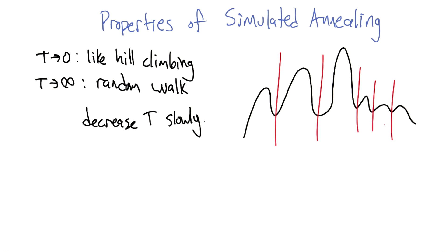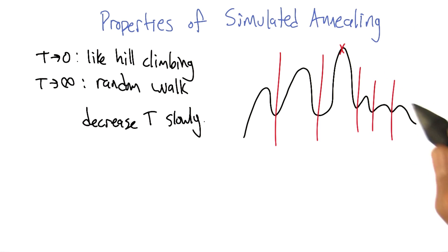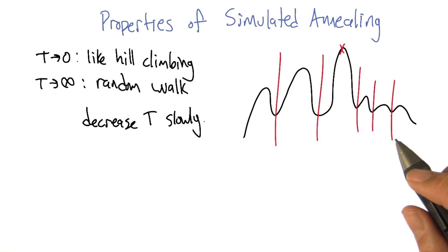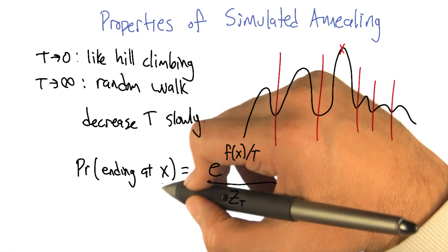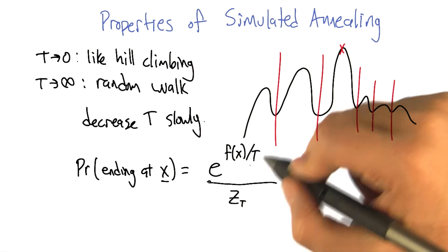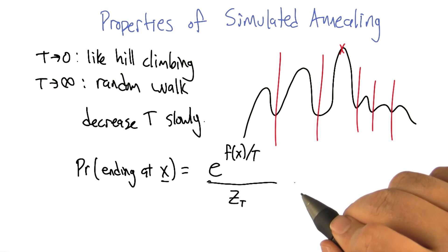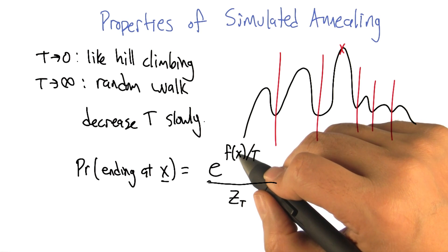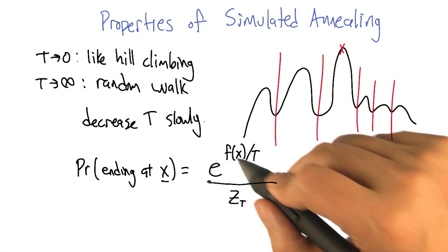So where do you end up? Well, if we're lucky, we end up at the global optimum. Can we characterize how often we end up there, or do we need randomized restarts? There is a remarkable fact about simulated annealing worth mentioning: the probability of ending at any given point x in the space is e to the fitness of x divided by the temperature, normalized, because this is a probability distribution over the input space. This is saying it's most likely to be in the places that have high fitness.